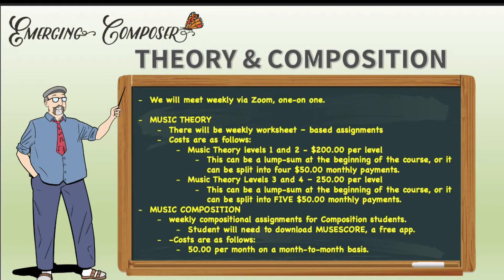For the music theory courses, there's going to be a weekly worksheet-based assignment. Cost will be as follows: music theory levels one and two, $200 per level. This can be a lump sum at the beginning of the course, or it can be split into five $50 monthly payments. Music levels three and four, $250 per level — also payable as a lump sum or split into five $50 monthly payments. Each weekly lesson will be approximately 30 minutes.